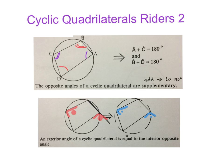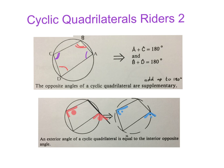The second theorem says an exterior angle of a cyclic quadrilateral is equal to the interior opposite angle. That means that exterior red angle will be equal to the opposite interior red angle, and that exterior blue angle will be equal to the opposite interior blue angle.